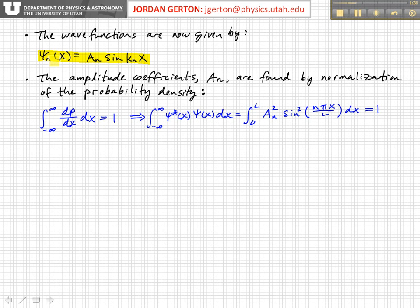So how do we find the amplitude coefficients? Well, we basically have to normalize the wave function. That is, we know that the particle has to be somewhere in the box. We know it can't be outside of the box, so if we integrate the probability density, which if you remember, the probability density is equal to psi star psi, where psi star is just the complex conjugate of the wave function. In this case, the wave functions are real, and so the complex conjugate is just equal to the wave function.